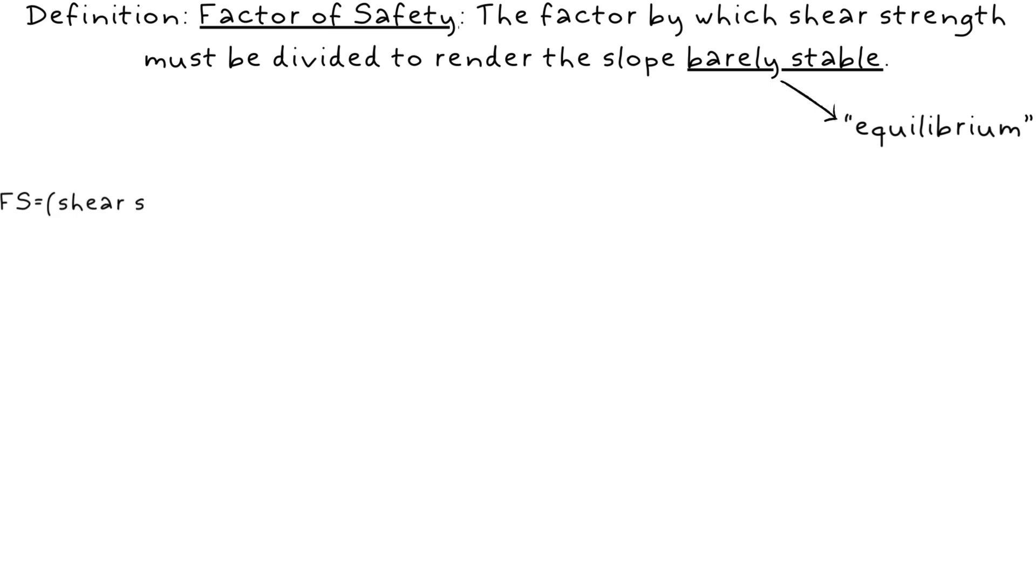Using Culmann's method, we will find the slope's factor of safety, which can be defined as the factor by which shear strength must be divided to render the slope barely stable or be in equilibrium.